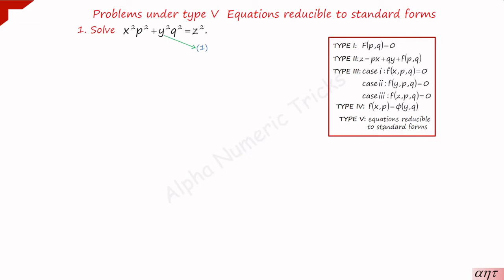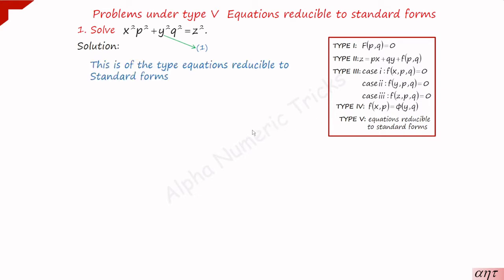But this last type of problems has a combination of all the variables — x, y, p, q, z — but not in the standard forms; it is in a different form. You can reduce this problem to any one of these four types and then get the solution. This is of the form: equations reducible to standard form.